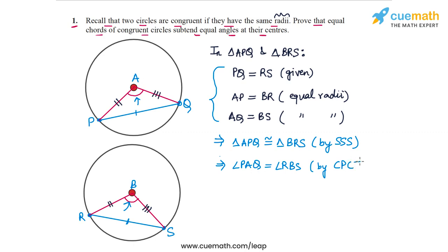corresponding parts of congruent triangles. And this basically proves that the chords subtend equal angles at their respective centers. So this is the proof of question one.